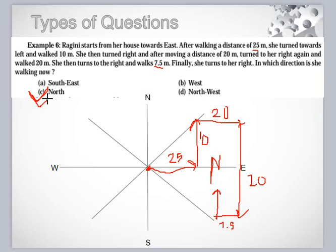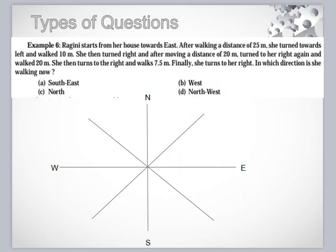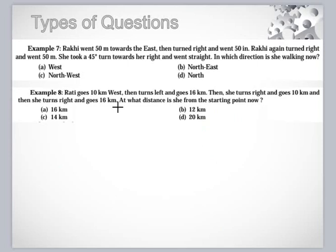In an examination, if you see a lengthy question like this, you can also look at the options. If the options have no magnitude listed, then keep in mind that the question is not linked with magnitude. Just pay attention to drawing the lines, not to the magnitude. I am writing the magnitude here just to show you, but it will take your time. So let's move on to the next question.